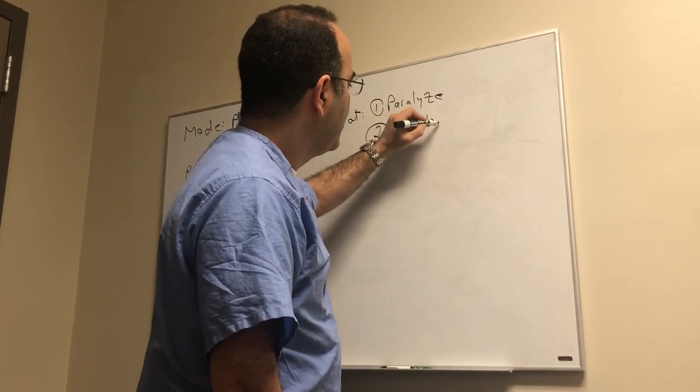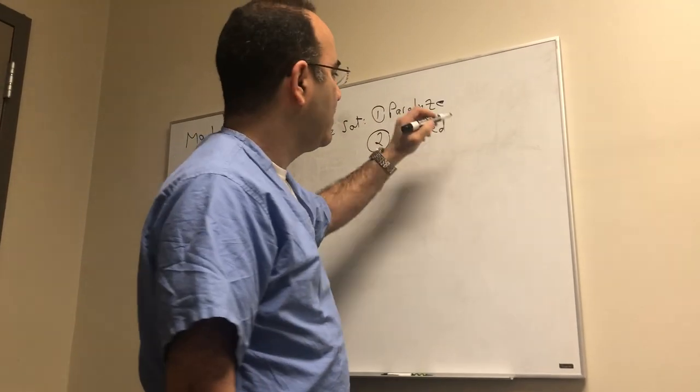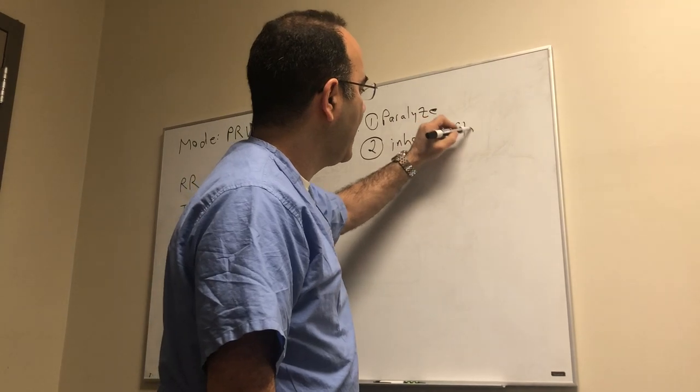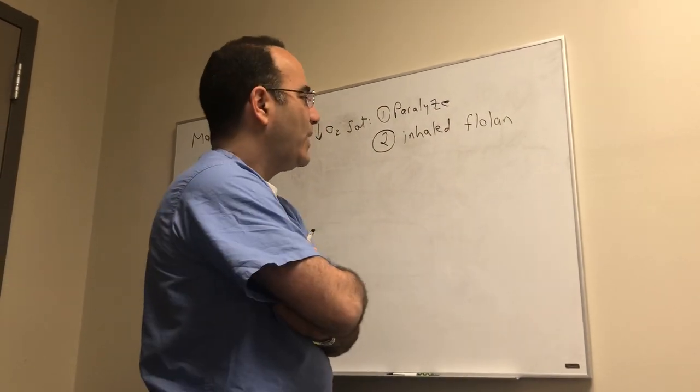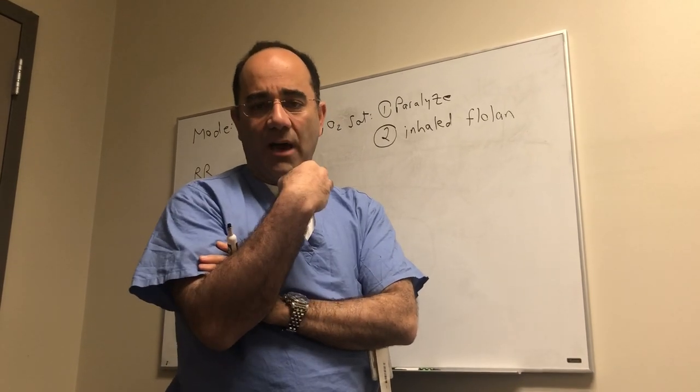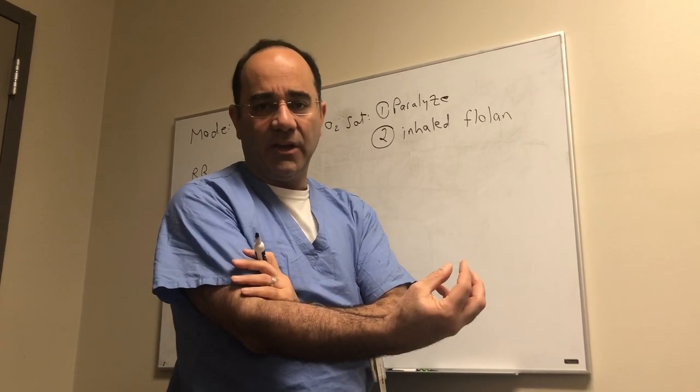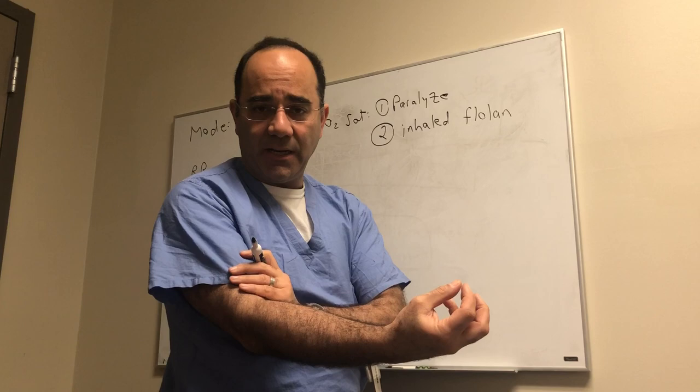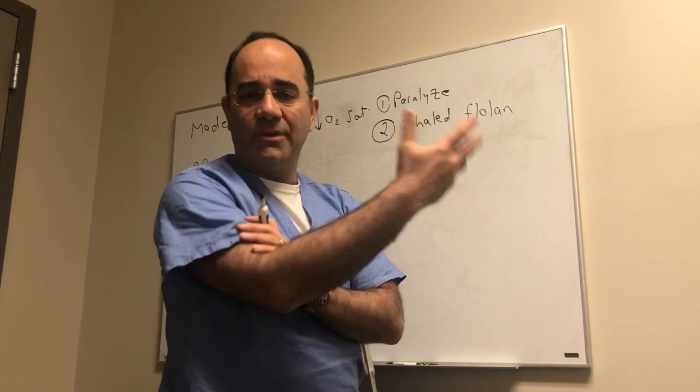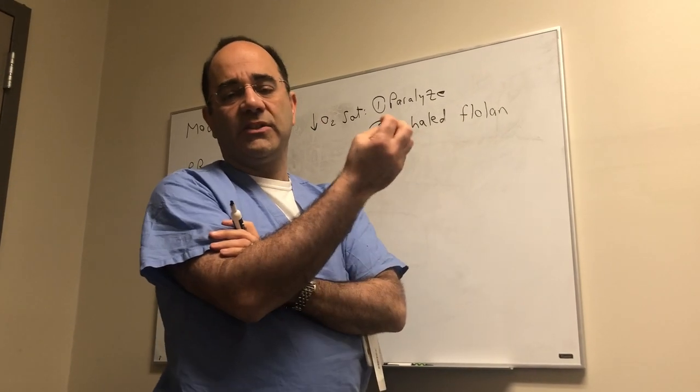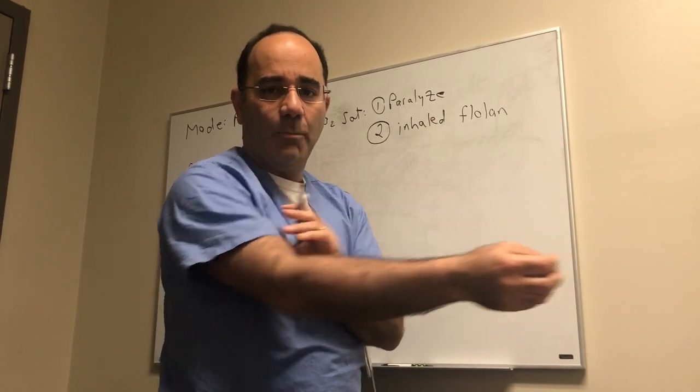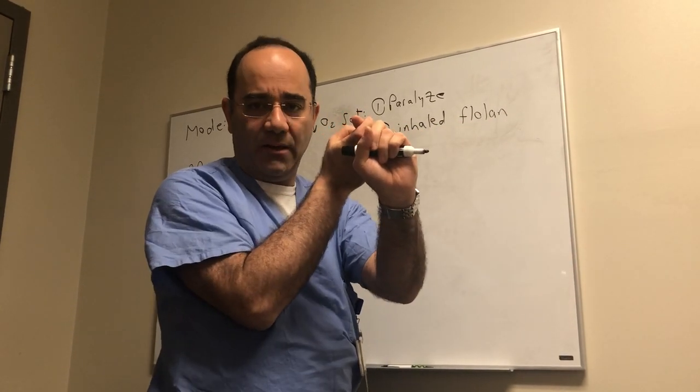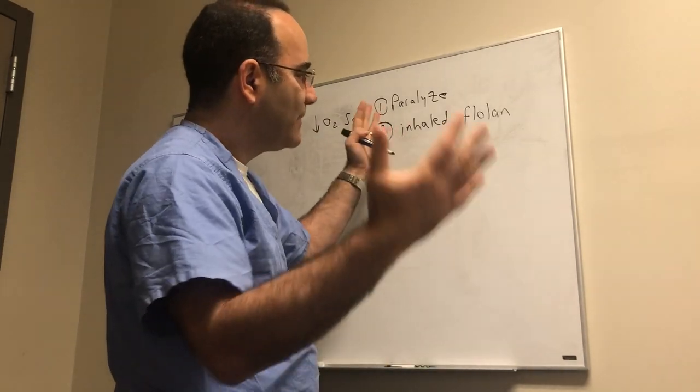The second one is you can prescribe an inhaled arterial dilator. At George Washington we tend to use Flolan which is a prostacyclin. We give it inhaled so that when it goes down the endotracheal tube it selectively goes to the alveoli that are aerated. It will not go to the ones that are full of debris and stuff, and therefore it'll selectively dilate the arterioles that go to those alveoli. You're basically creating a V/Q match again and trying to augment oxygen exchange that way.